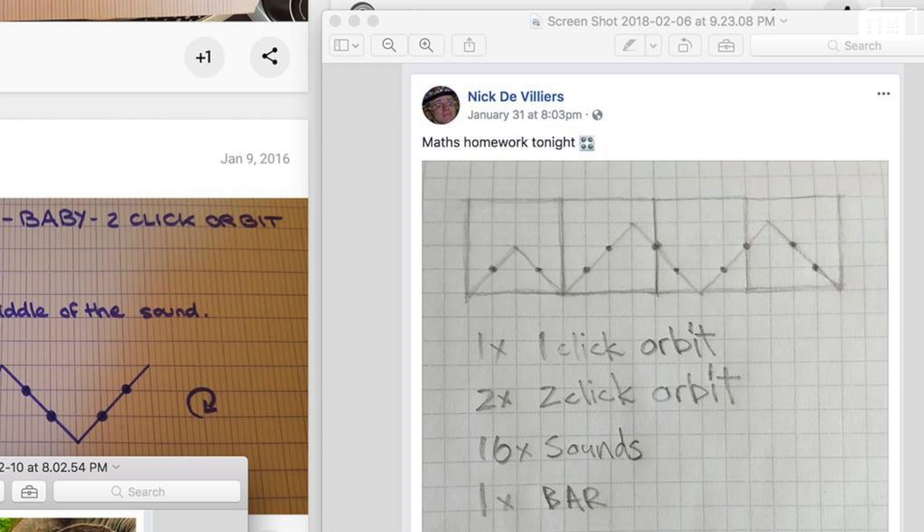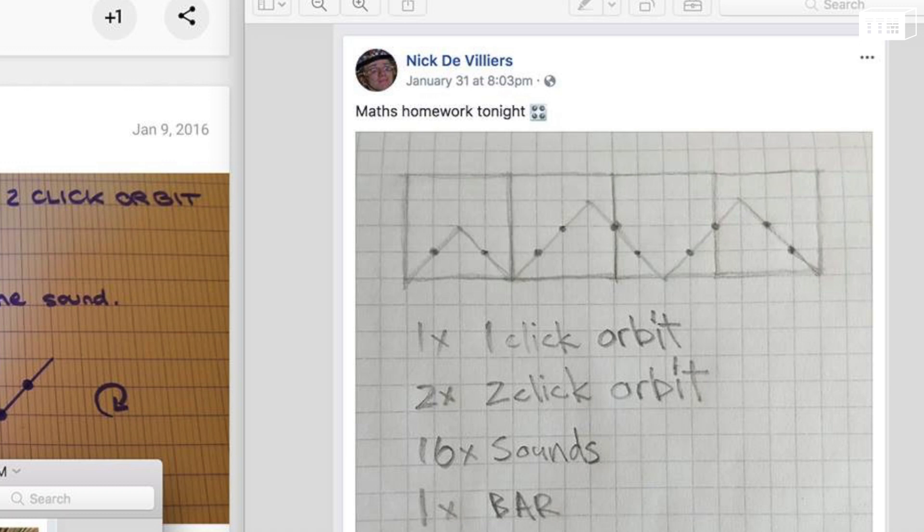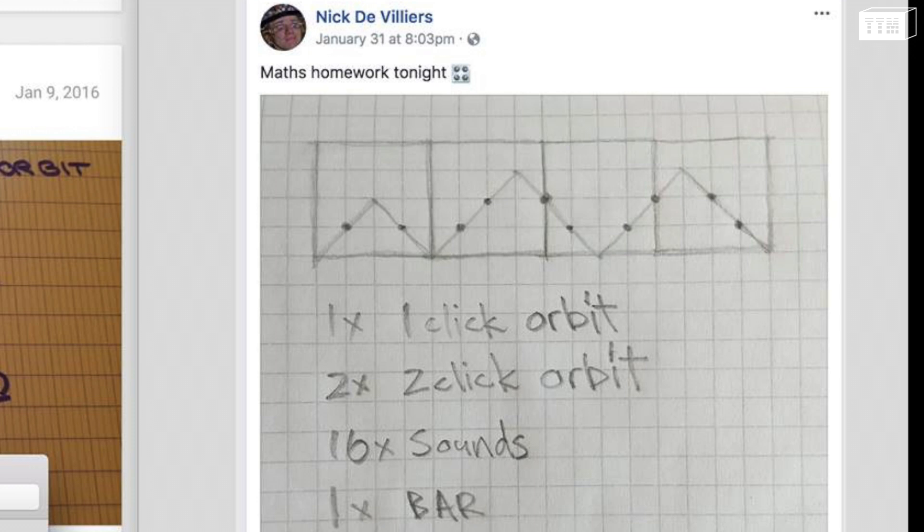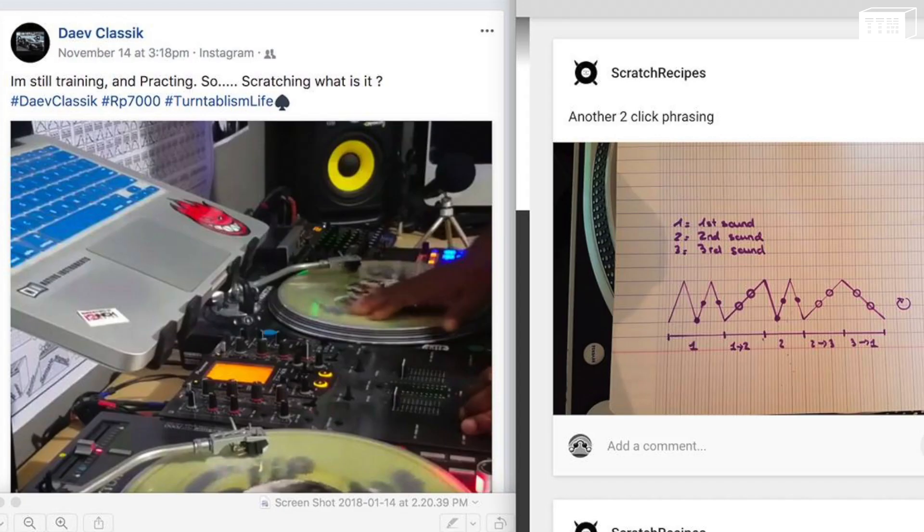Outstanding work to all the TTM composers around the world. At the bottom right in pencil is a great work by South African turntablist Nick de Villiers. The scratches featured are an orbit followed by two cross rhythm two click orbits.